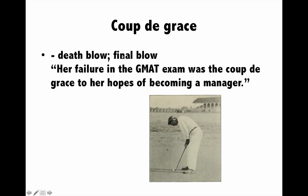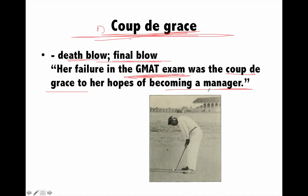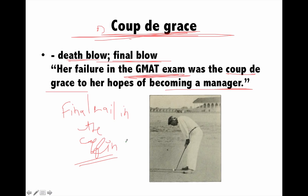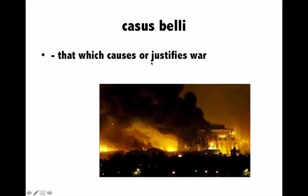Next is 'coup de grâce' — it is pronounced 'koo de gra', not 'coup de grace'. Coup de grâce means a death blow or final blow. For example, I could not clear the GMAT exam and it was a coup de grâce to my hopes of becoming a manager — a heavy blow meaning I can't do it. It can also be called the final nail in the coffin. For example, Virender Sehwag's non-selection for the England series was a coup de grâce in his attempt to get back into the Indian team.